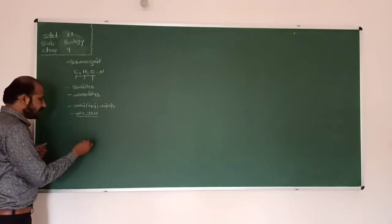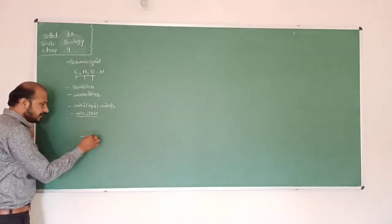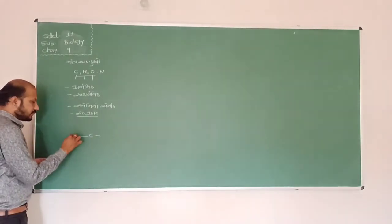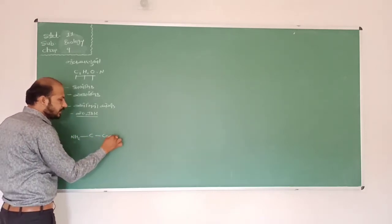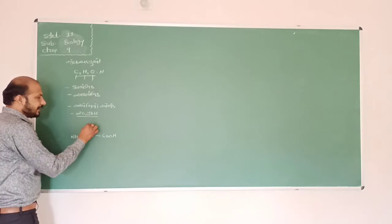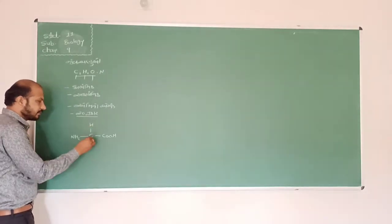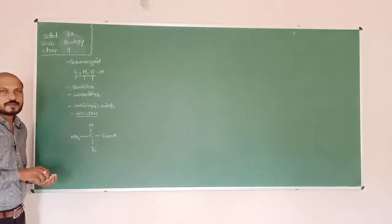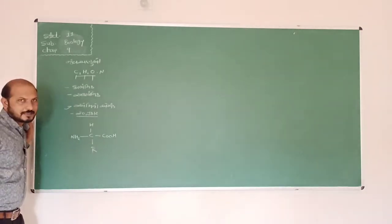We have seen in the amino acid: carbon, carbon in 1, NS2 and 1, C1, OH and in 3, 1, H and R. So we have seen the structure of the amino acid.